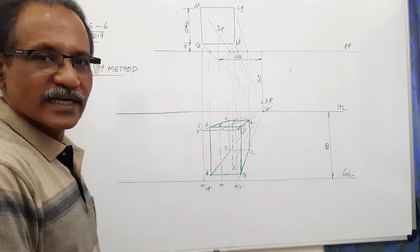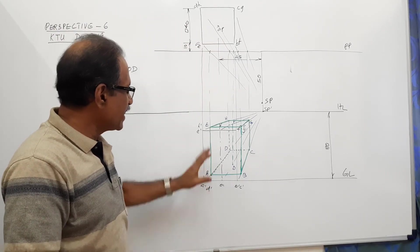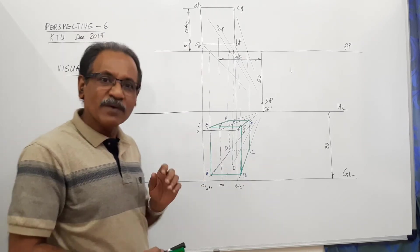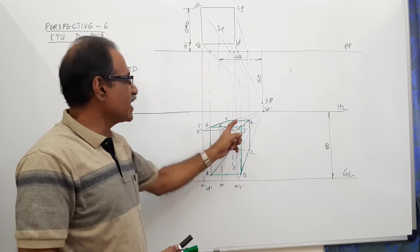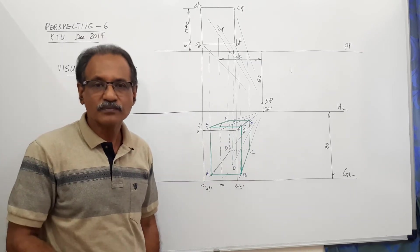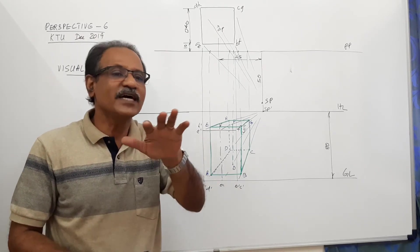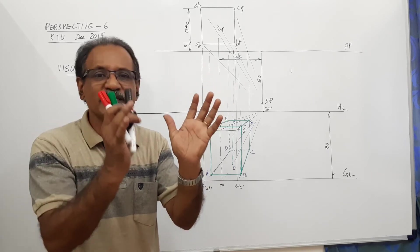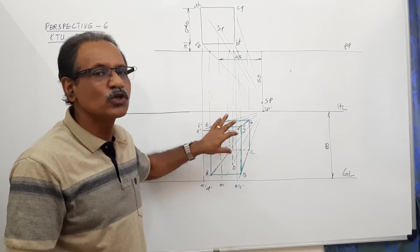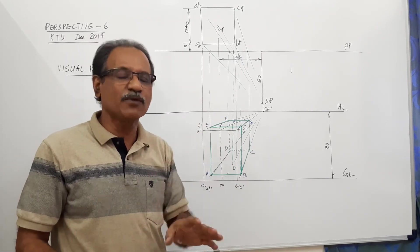Since the rectangular face ABEF is not touching the PP line, it is slightly pulled back — you can see it is pulled back. A key issue in the visual ray method is that if you draw the elevation very dark, you will land up in total trouble, because the perspective view you draw will be very close to it and will overlap.